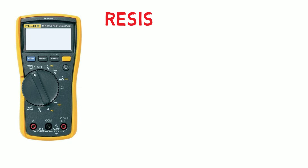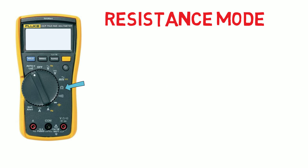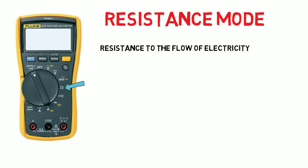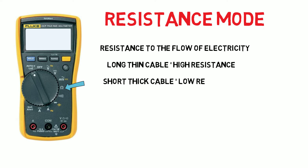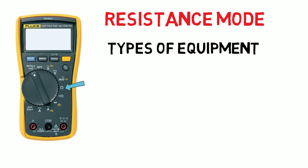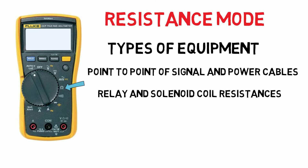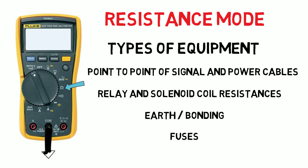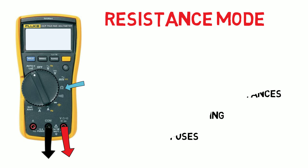We can use the meter to measure resistance, which is measured in ohms. Resistance is the measurement of the restriction to the flow of electricity — the easier the current flows through a conductor the lower the resistance. Long, low diameter cable will have a high resistance whereas a short, high diameter cable will have a low resistance. In instrumentation the types of things we would be measuring the resistance of are point-to-point signal and power cables, relay and solenoid coil resistances, resistance between earth or bonding straps, and testing of fuses. To test for resistance we need to have our probes connected to the common and ohm symbol ports. It is good practice to connect the black probe to common and red probe to the ohms connection, as when measuring voltage the polarity is important.